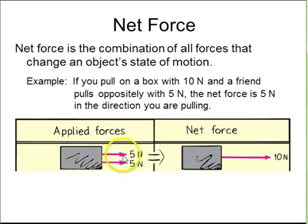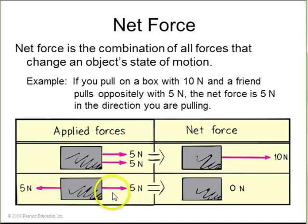Here's a block being pulled by two 5 newton forces in the same direction. The net force in this block is 10 newtons. And here's a block being pulled by two equal and opposite forces, which cancel, and the net force is zero.